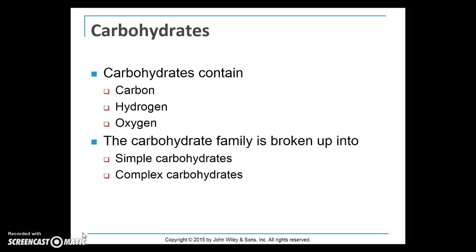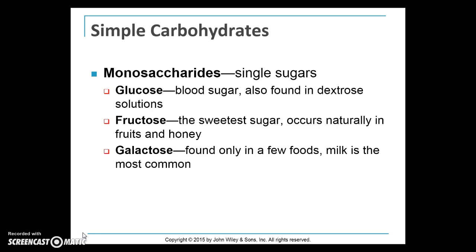We refer to them as simple carbohydrates and complex carbohydrates. Monosaccharides, or single sugars, are referred to as simple carbohydrates — what we commonly call sugars. The three most common monosaccharides in the diet are glucose, fructose, and galactose, and each contains six carbons, 12 hydrogens, and six oxygens — C6H12O6. These three sugars differ in the arrangement of these atoms.